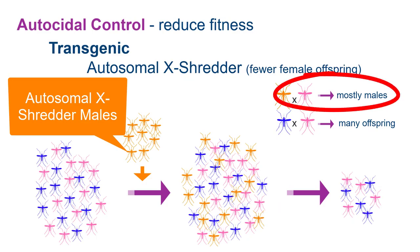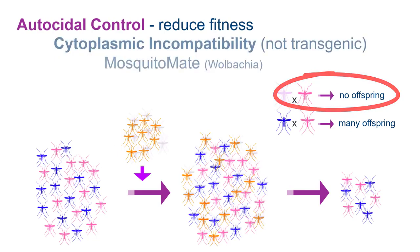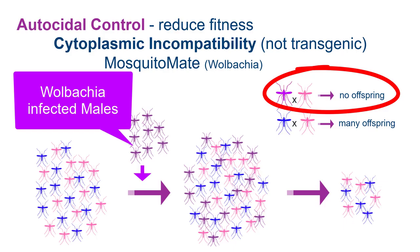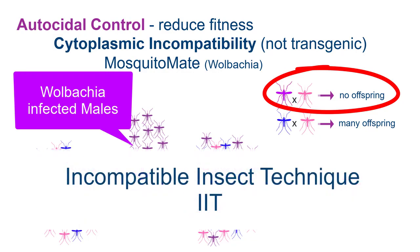One such technology is known as Autosomal X-Shredder. The company MosquitoMate, along with the Google company Verily, have developed and are now deploying a non-transgenic Aedes aegypti control method based on a genetic phenomenon known as cytoplasmic incompatibility. It's based on the release of only males harboring a unique intracellular bacterial symbiont known as Wolbachia. When these males mate with wild females who naturally lack the symbiont, all of the offspring will die as embryos as a result of cytoplasmic incompatibility. This method is generally known as the Incompatible Insect Technique.